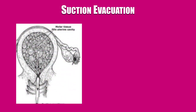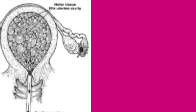Once the patient is determined to be hemodynamically stable, the most appropriate method of molar evacuation should be employed. Suction evacuation and curettage is the preferred method of evacuation of hydatidiform mole, independent of uterine size, for patients who wish to maintain their fertility. After anesthesia is achieved, the cervix is dilated to allow a 10–12 mm suction cannula to pass into the lower uterine segment and then rotated as the intrauterine contents are removed, preferably under ultrasound guidance. An oxytocin infusion — 10 units in 1 litre of Ringer's lactate solution at 50 drops per minute — should be started after initiation of evacuation to increase myometrial tone, facilitate contraction, and decrease blood loss. This is done even though oxytocin receptors may be absent.